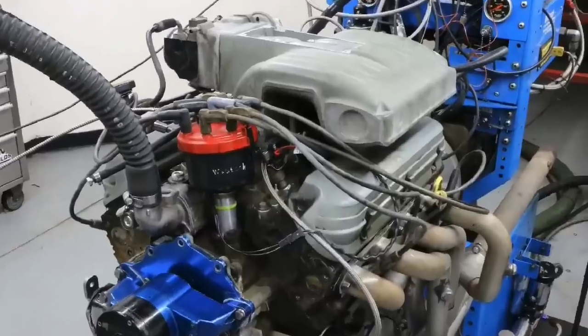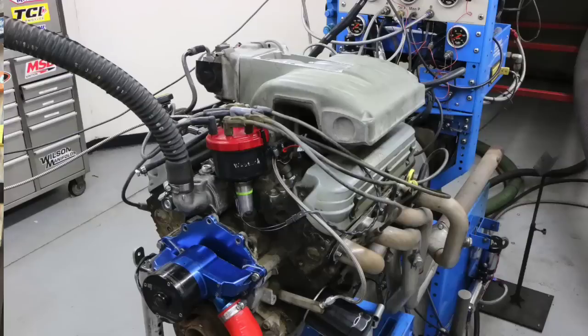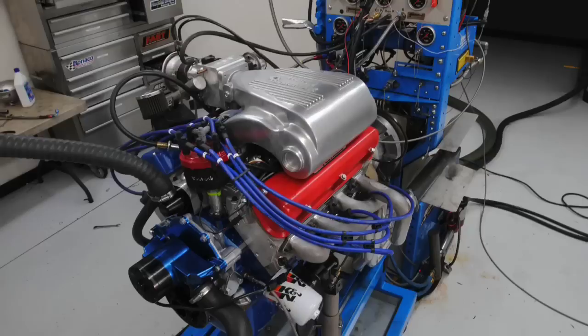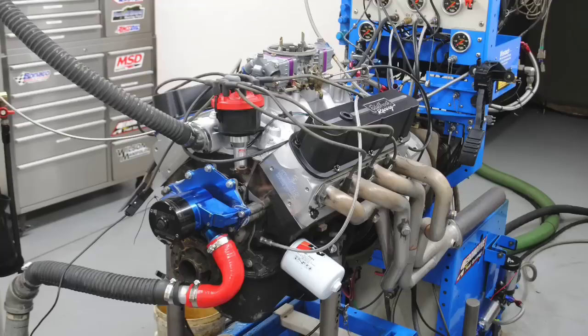If you've got a 5-liter Mustang, either Fox chassis or an SN95, should you upgrade your 302, swap in a 351, or swap in an LS? In this video we're going to look at a comparison between a stock 302, a stock 351 Windsor, and a stock 4.8 liter and 5.3 LS. Then we're going to look at modified versions of the 302, modified versions of the 351, and modified versions of the LS.